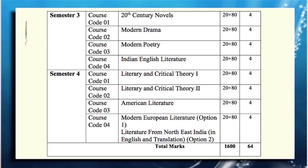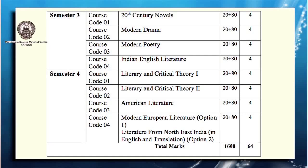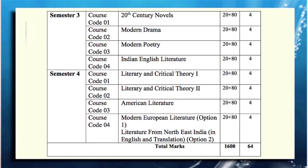The papers in semester four are Literary and Critical Theory 1, Literary and Critical Theory 2, and American Literature. There are also two optional papers: the first one is Literature from Northeast India and the second one is Modern European Literature.